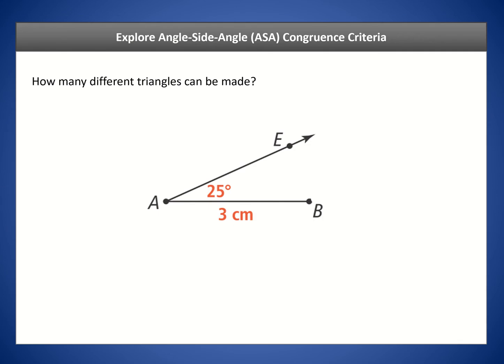We're going to explore the angle-side-angle congruence criteria, also known as ASA. Looking at this diagram, we have angle EAB — essentially two rays. This angle is 25 degrees, and we know one of the sides: AB is three centimeters. What we want to ask ourselves is how many different triangles can be made from this configuration? If I were to extend a side from B somewhere and make a triangle, how many different triangles of a particular type can be made?